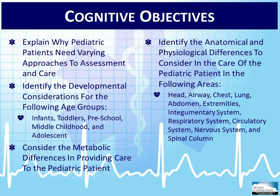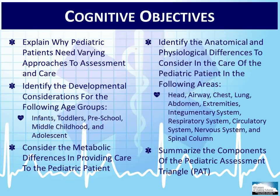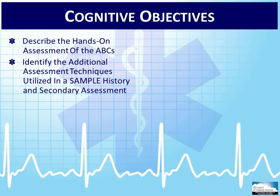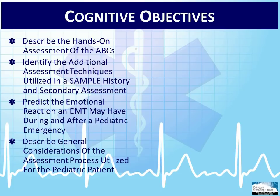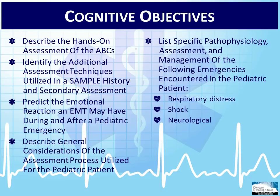Summarize the components of the Pediatric Assessment Triangle, PAT. Describe the hands-on assessment of the ABCs. Identify additional assessment techniques utilized in a SAMPLE history and secondary assessment. Predict the emotional reaction an EMT may have during and after a pediatric emergency. Describe general considerations of the assessment process utilized for the pediatric patient. List specific pathophysiology, assessment, and management of emergencies including respiratory distress, shock, neurological, gastrointestinal, toxicology, SIDS, and trauma.